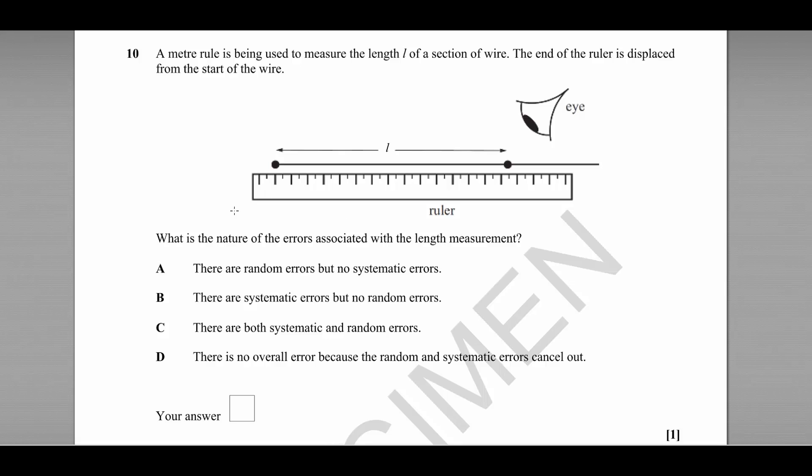So if we take a look at this, basically the question is asking which errors are present in this ruler. Well a random error is certainly present because the ruler has space between the increments.